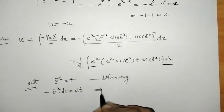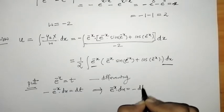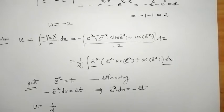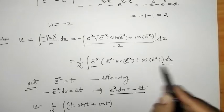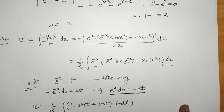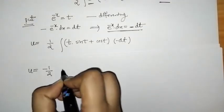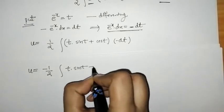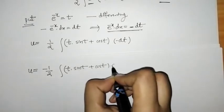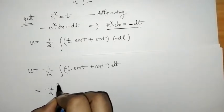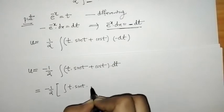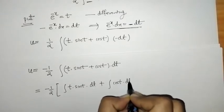Substituting e^(-x) dx = -dt, we get t * sin(t) + cos(t), with e^(-x) dx = -dt. Taking the minus sign outside, we have the integral of (t*sin(t) + cos(t)) with respect to t, which we separate into the integral of t*sin(t) and the integral of cos(t).